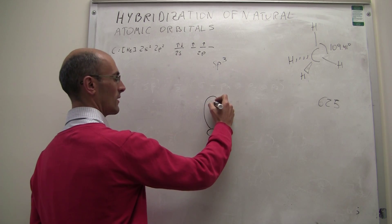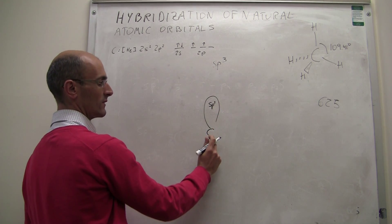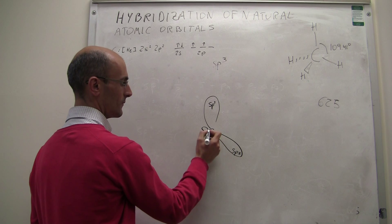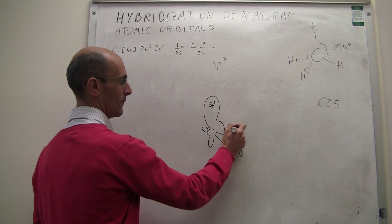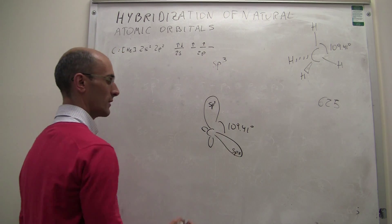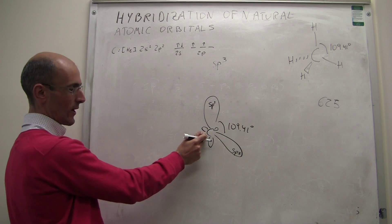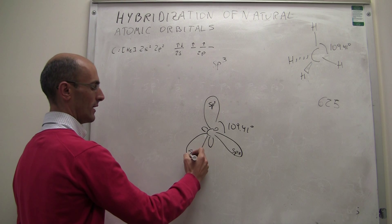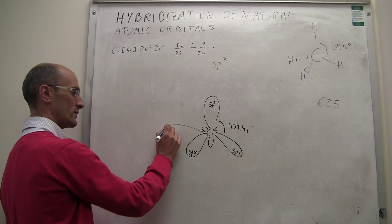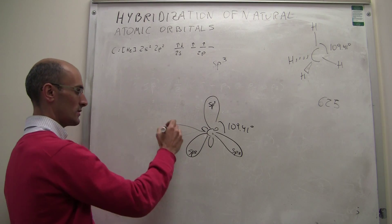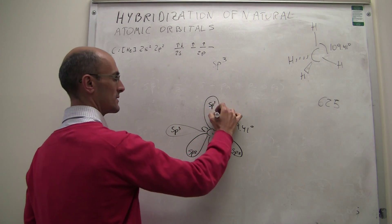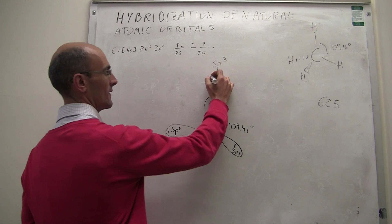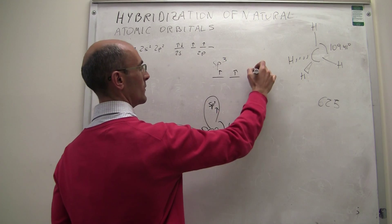In the end, when you mix the s, px, py, and pz orbitals according to those four linear combinations, you end up with four sp3 hybrid orbitals pointing towards alternate vertices of a cube — which is exactly the tetrahedral shape. Here is how one sp3 looks: one large lobe and a tiny electron density on the other side. The angle between adjacent sp3 orbitals is 109.4 degrees. Each one of these orbitals has one electron after promotion and hybridization.